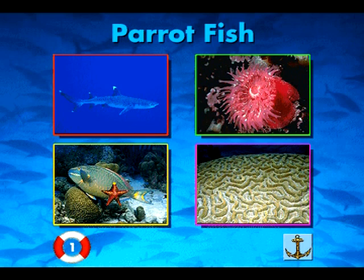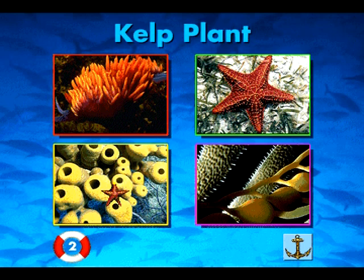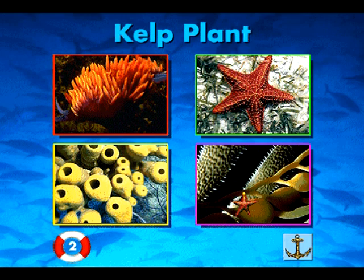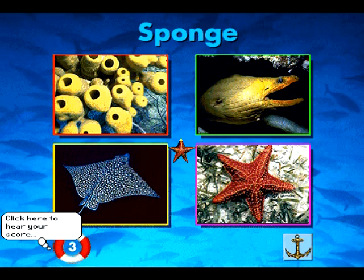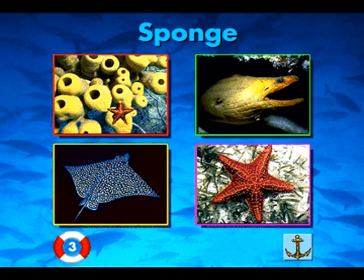Keep looking. You're right! I'm a parrotfish. I'm a kelp plant. Can you find me? You're right! I'm a kelp plant. I'm a sponge. Can you find me? This is your score so far. Three. You're right! I'm a sponge.